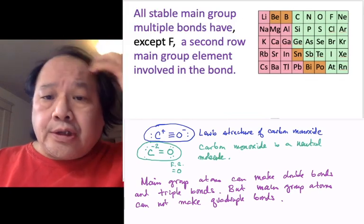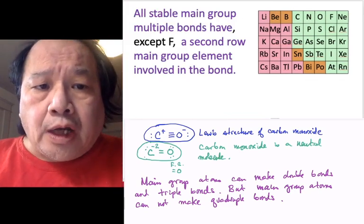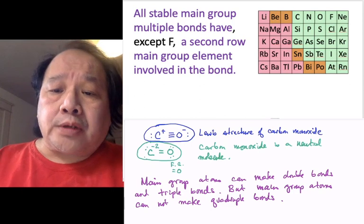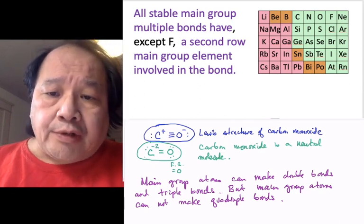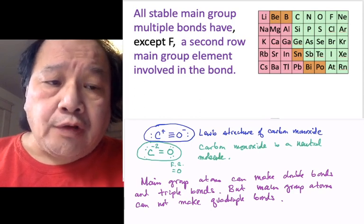And the second rule is that all, it's written in purple on top, all stable main group multiple bonds, with the exception of fluorine, have a second row main group element involved in the bond.